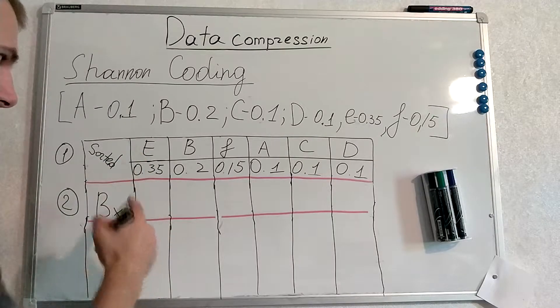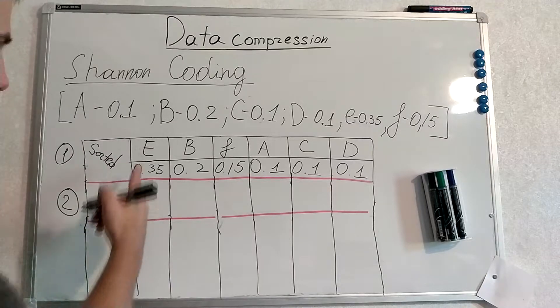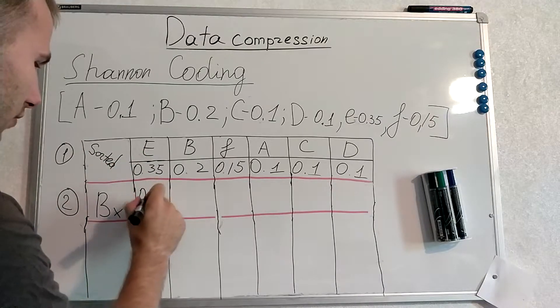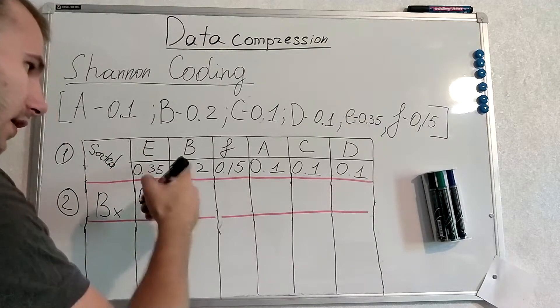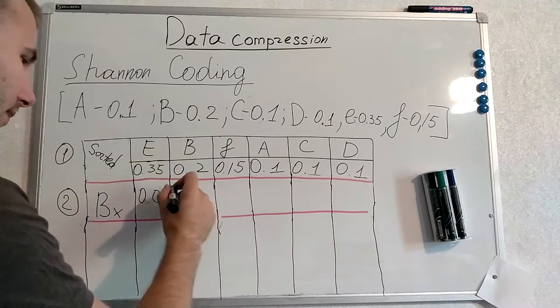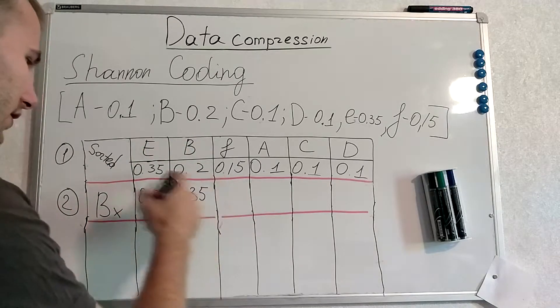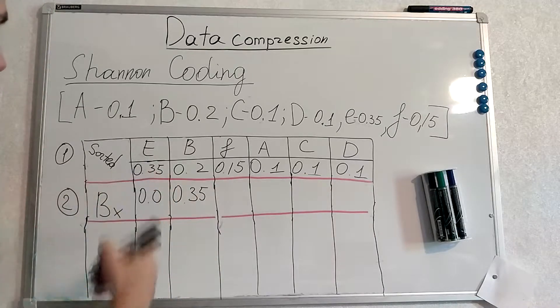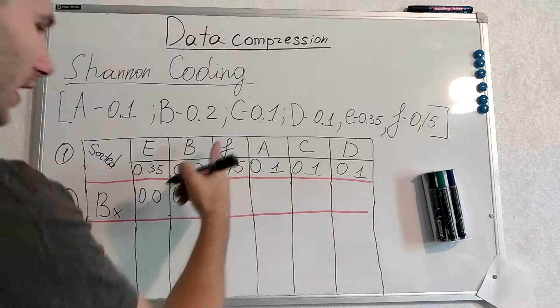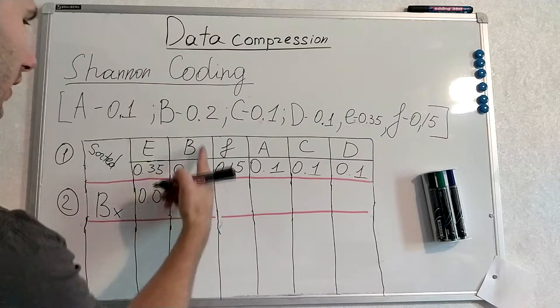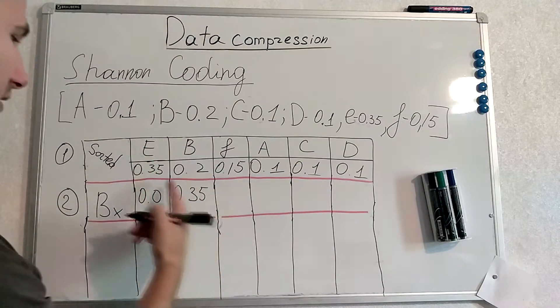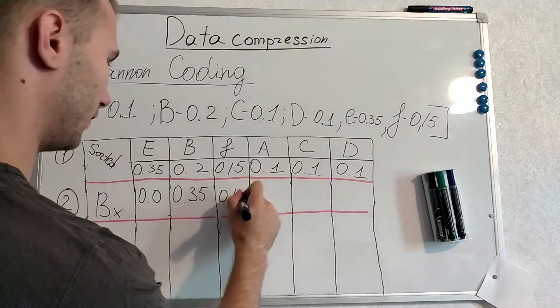We have faced 0 symbols in our sorted sequence before E. So Bx for E will be 0. We have faced E before B, only E. Thus the probability is 0.35. For F it will be the sum of previous symbols we have faced. So it will be 0.55.